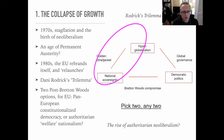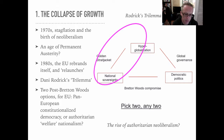It's worth thinking about this for a minute. Obviously Bretton Woods was a marriage of democratic politics and national sovereignty — a way of using the sovereignty of the nation as a kind of marriage counselor between the logic of the market and the logic of democracy. And democracy was successfully — because it could be afforded — managing to keep the logic of capitalism sort of constrained.